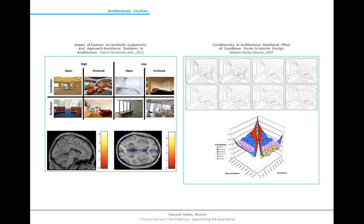These two architectonic studies reviewed not only supported hypotheses established from the previous studies but also helped define the methodology used in this study in three major ways: one, the removal of color and extraneous furniture that could lead to potential bias; two, utilizing bipolar adjectives as found in the doctoral thesis on the right; and three, the utilization of a semi-immersive virtual environment.